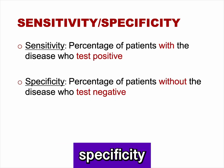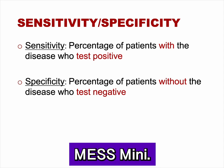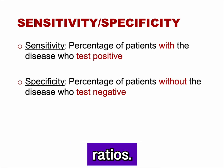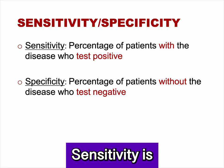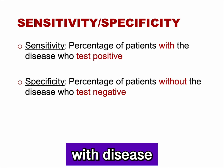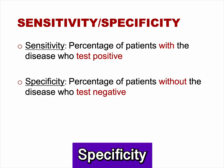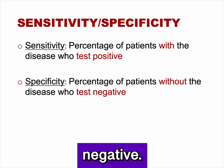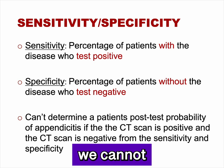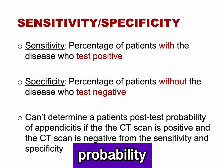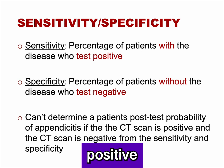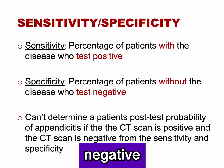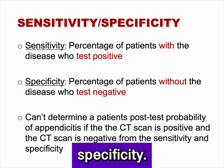I have reviewed sensitivity and specificity in detail in a separate MESS Mini. I include them here only for comparison to likelihood ratios. Sensitivity is the percentage of patients with disease who test positive. Specificity is the percentage of patients without disease who test negative. Unfortunately, we cannot determine a patient's post-test probability of appendicitis from sensitivity and specificity alone.